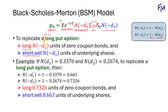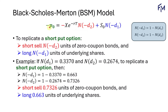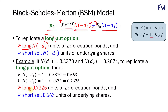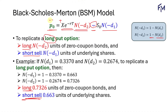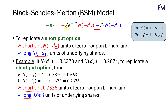If you want to replicate a short put option, we just multiply a negative sign on both sides. This time, we'll have to short sell the zero coupon bonds and long the underlying shares, based on the values of N of negative D sub 2 and N of negative D sub 1. So it's just changing from long to short sell and vice versa. You just need to stick to the put option formula, and if you need to do a short put, just multiply a negative sign — no extra formulas needed.